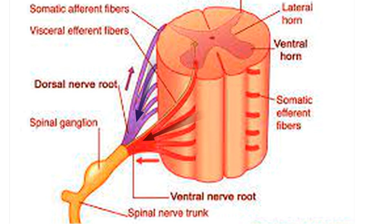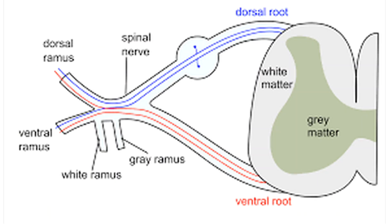Ventral and dorsal fibers join to make ventral and dorsal roots, and these two roots join to make the spinal nerve. The spinal nerve then splits into a dorsal ramus and a ventral ramus. Both rami have motor and sensory fibers. The red fibers are from the ventral root — meaning motor fibers — and the blue fibers are from the dorsal root — meaning sensory fibers. I hope that is clear.